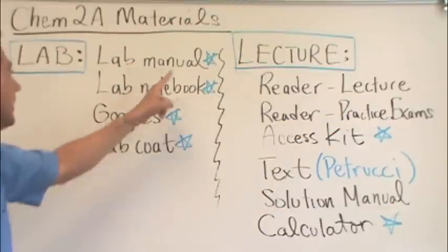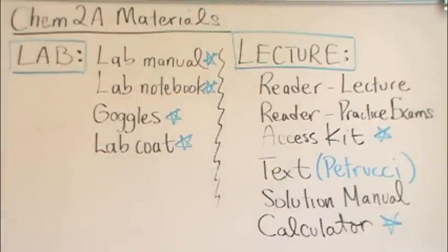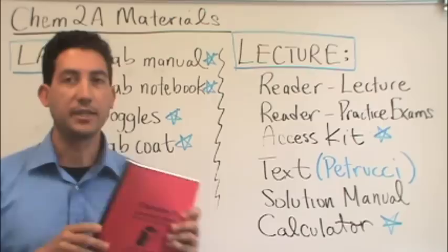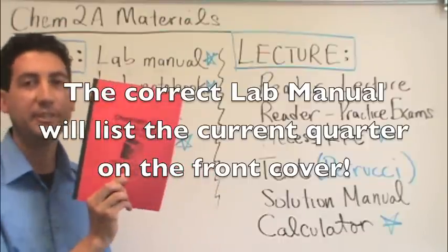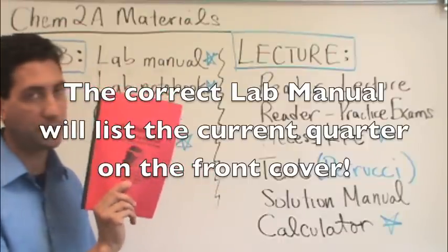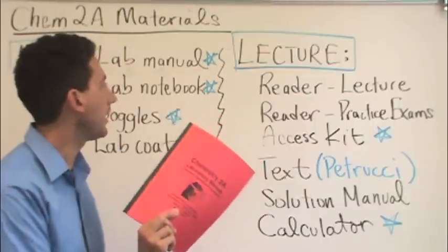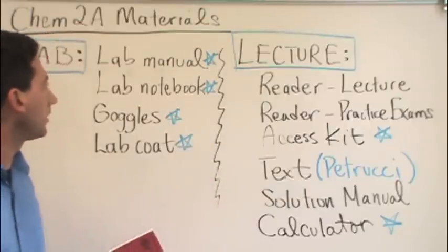But otherwise, you can use the textbook and the solutions manual from the library. So that's up to you. In the lab, you're going to see that everything here is starred. That's because they're all required. You have to get all this stuff to be in the lab. The lab manual. It's red as everything else is in 2A. You must have the current version. Must, must. So this is an old one. You couldn't use this one. But you need the most current one that you can get at the UCD bookstore. They are super cheap.